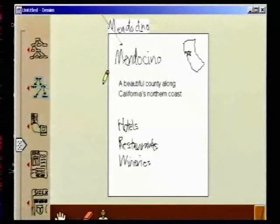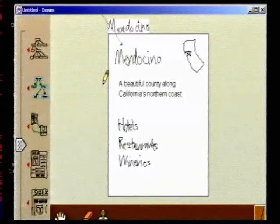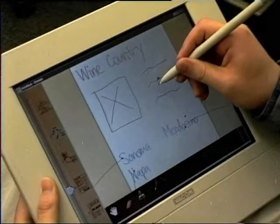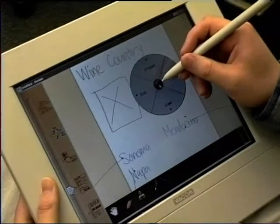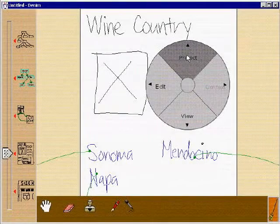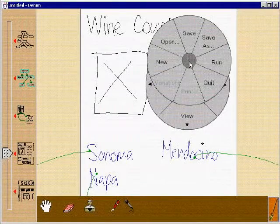Denim replaces the Greek text with the typed words. To save his design, Bob holds the button on the pen while tapping on the screen. This pops up a pie menu. Pie menus are more natural for pen interaction than linear menus.